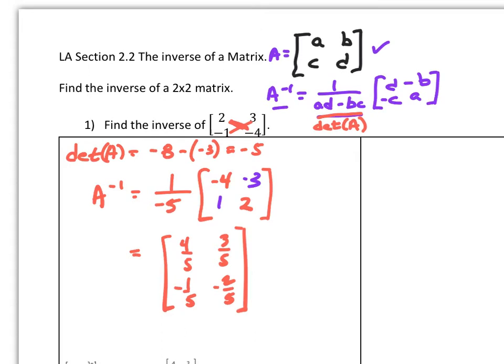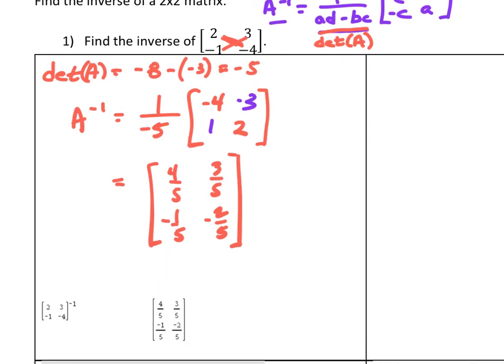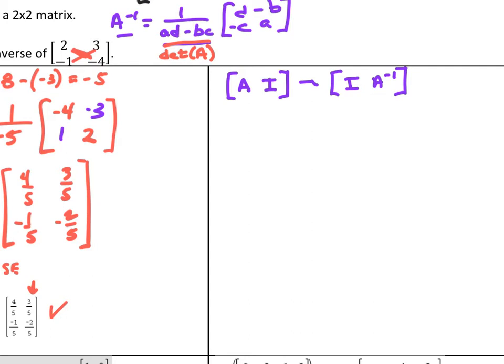That's how you find the inverse of a 2×2 matrix. Another way is to type it into your calculator — you use the caret up and then negative 1 and hit enter, which will find the inverse for you. This is not raising to the negative 1 power, but it finds the inverse, as shown by the output. The third way is with augmented matrices.